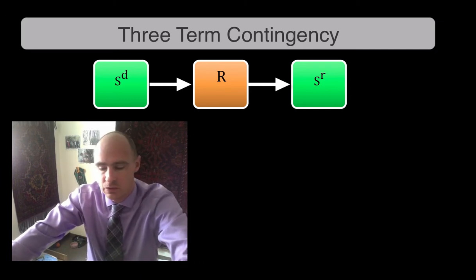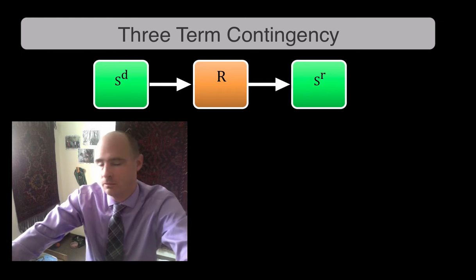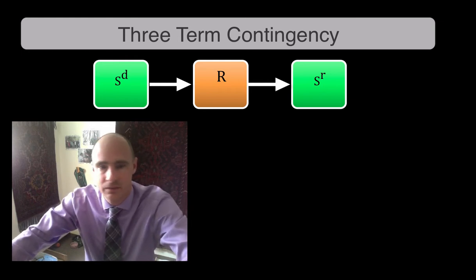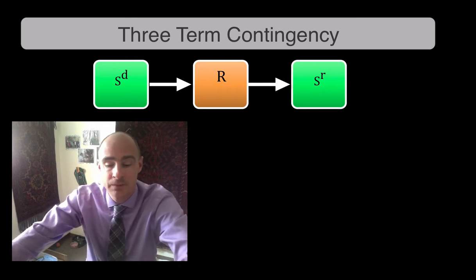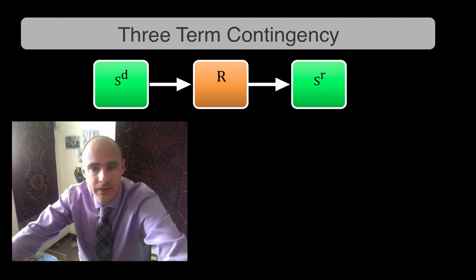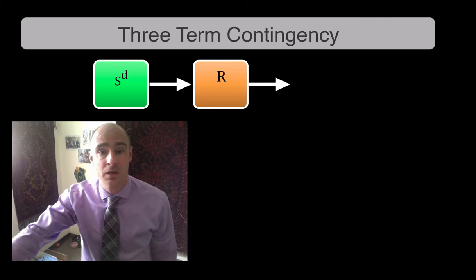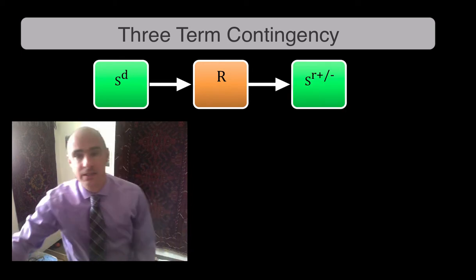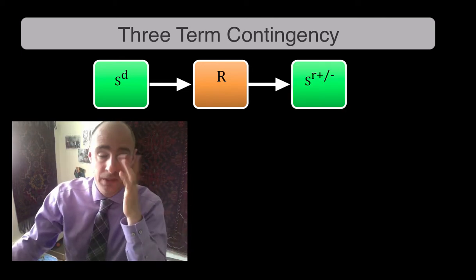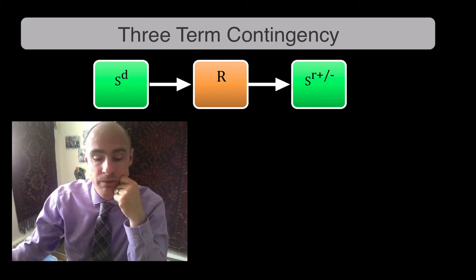SR means a stimulus that reinforces. We can talk about the issues with that later on, if you guys want to talk about Premack Principle and stimuli and more actions and all that stuff. That's a different topic. So an SR is a stimulus that reinforces. Now, as you know, we have two types of reinforcement, so there are two different notations for that. There is SR plus, and there's SR minus. The first one, SR plus, is obviously positive reinforcement, and the second one is negative reinforcement.